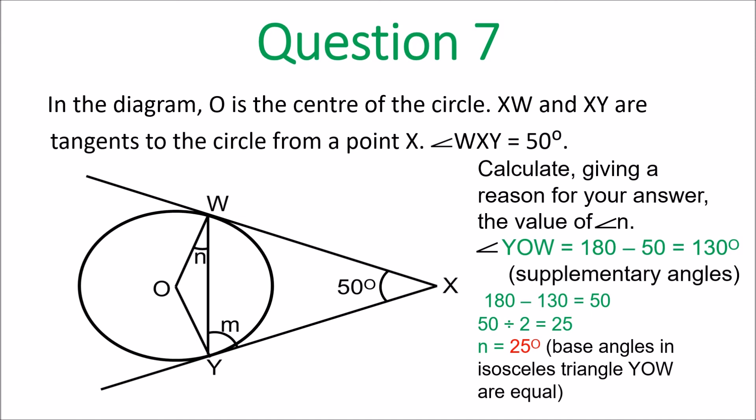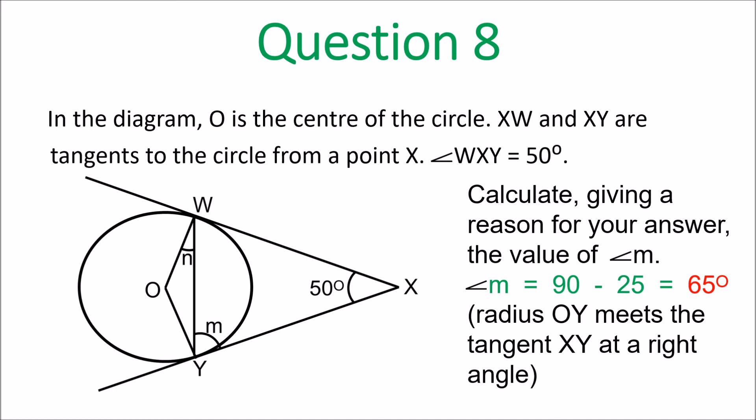Question 7: angle YOW equals 180 minus 50, which is 130 degrees, because those two angles are supplementary — that's a circle theorem. Then 180 minus 130 leaves 50 for triangle YWO, so the base angles of this isosceles triangle are each 25 degrees (divide 50 by 2). That's angle N equals 25 degrees. For question 8: angle M equals 90 minus 25 equals 65 degrees. The radius OY meets the tangent at a right angle, so you take 25 away from 90 to get 65 degrees.